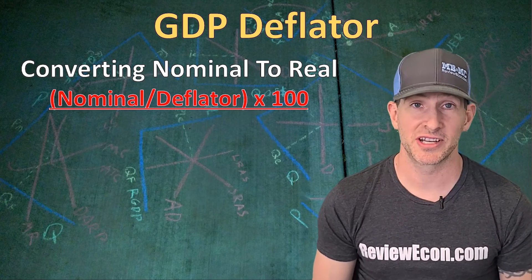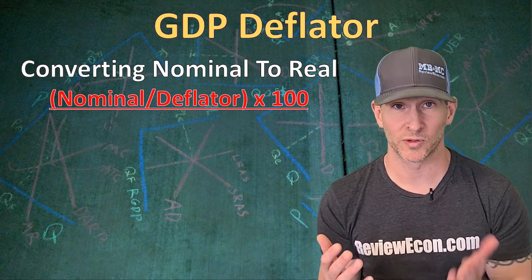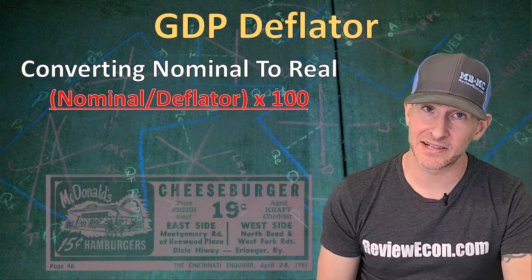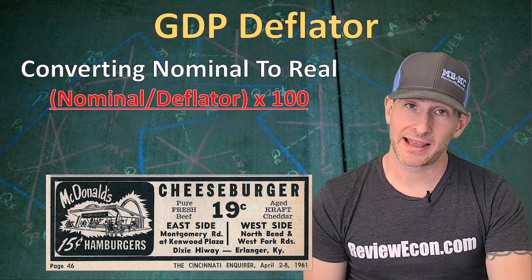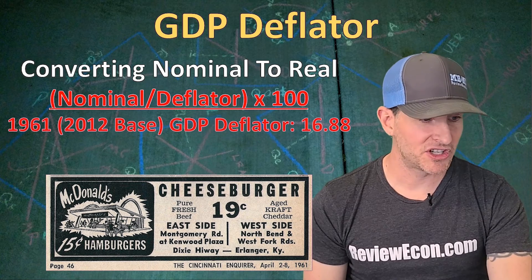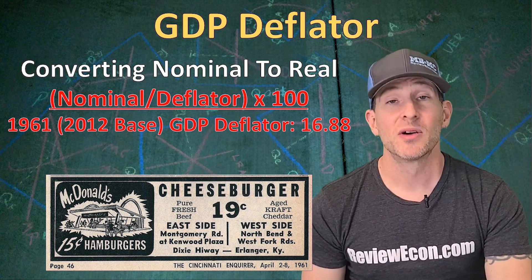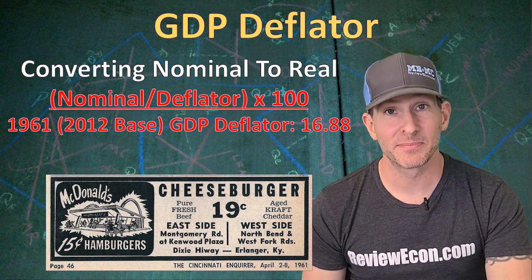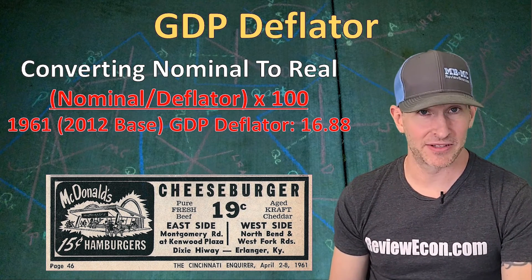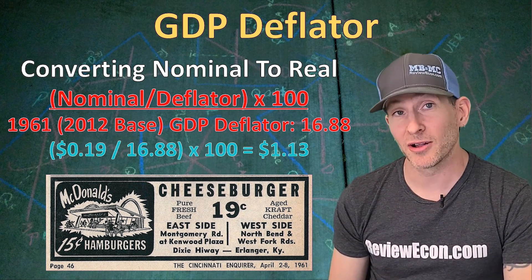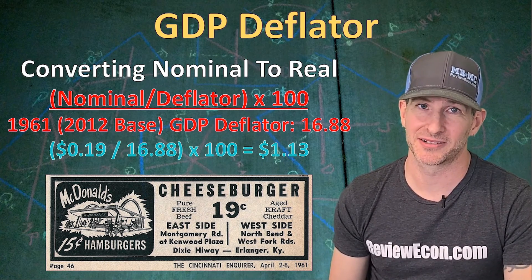You can also use the GDP deflator to convert nominal prices to real prices. In 1961, a McDonald's cheeseburger cost just 19 cents. At the same time, the GDP deflator using 2012 as a base year was 16.88, which tells us that the real value of that McDonald's cheeseburger was actually $1.13 in 2012 dollars.